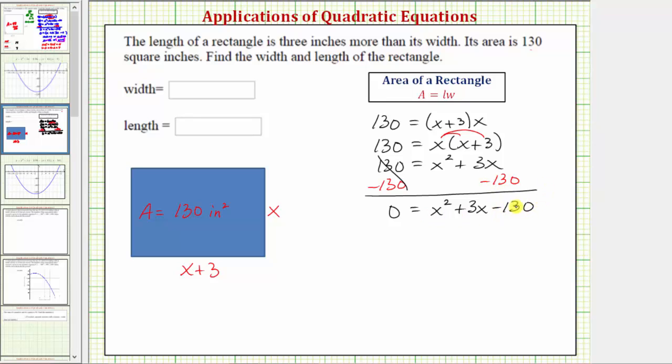And now if this does factor, it'll factor into two binomial factors. Because the first term is x squared, and x times x equals x squared, we'll have a factor of x here and here in the first positions of the binomial factors.